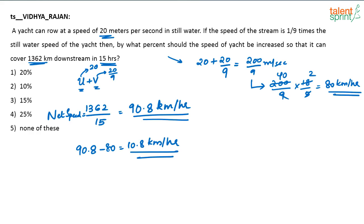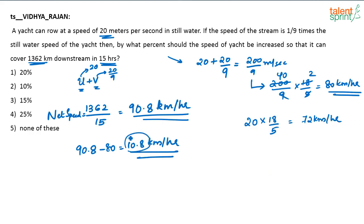The question asks by what percentage should the speed of the yacht be increased. What was the yacht's speed earlier? It was 20 meters per second, which is 20 × 18/5 = 72 kilometers per hour. The yacht has to increase its speed by 10.8, so the percentage increase is 10.8 divided by 72.